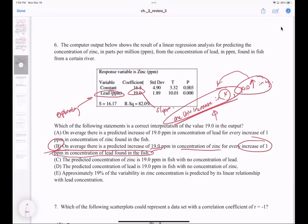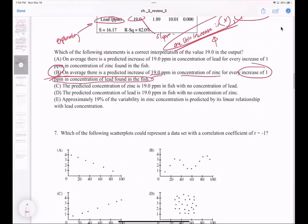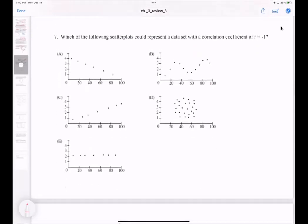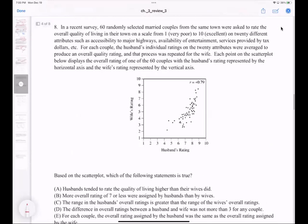Number seven: which of the following scatter plots could represent the data with negative one? I don't think that needs any explanation.